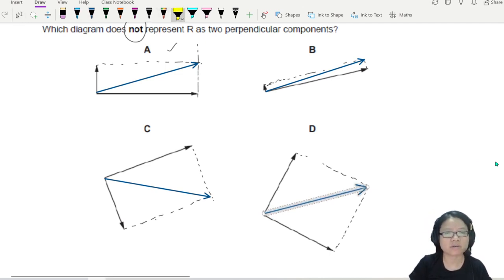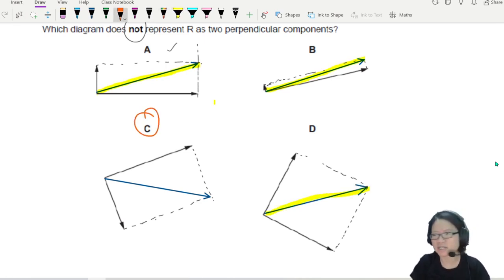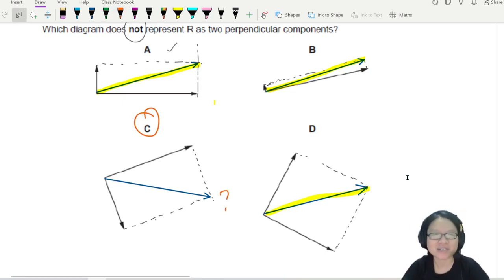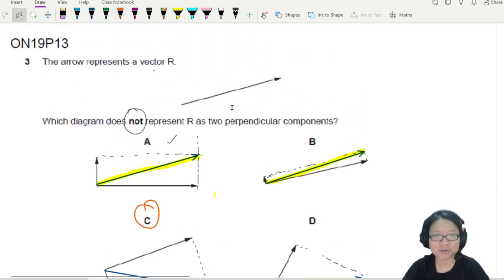If you look at A, B, and D, which one is not possible? C, because C is at this weird angle pointing down. That does not represent R correctly, because R is like this—R is pointing out.